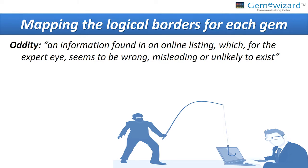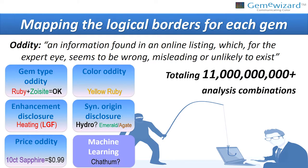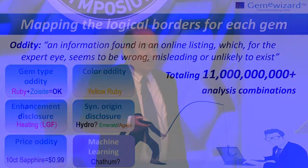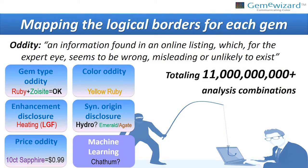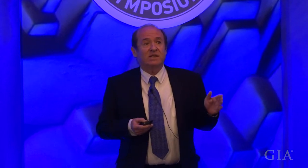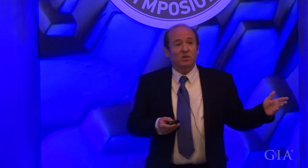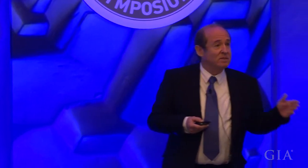What is an oddity? An oddity is information that would sound and look to an expert as very odd, wrong, misleading, or unlikely to exist. For example: ruby and zoisite together — although they are two different stones, Longido rubies have zoisite around them, so that combination is okay. Yellow rubies — if we find that, something is wrong. Another example: they write in the information 'it's only heated,' and then we find within the HTML 'LGF' — lead glass filled — which is dramatically different from heating. Price oddity: a 10-carat fine quality sapphire for 99 cents per carat — something is very wrong.